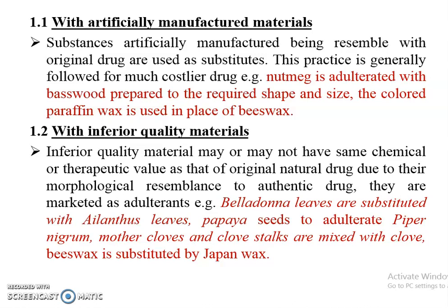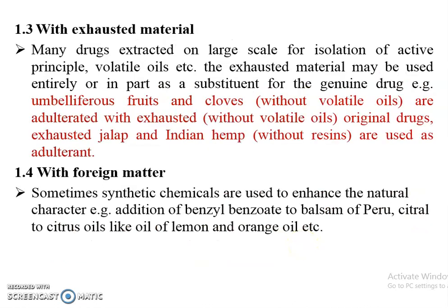Mother clove and clove stalks are mixed with clove. Beeswax is substituted by Japan wax. With exhausted material: many drugs extracted on a large scale for isolation of active principles, such as volatile oil, etc. — the exhausted material may be used entirely or in part as a substitute for the genuine drug. For example, cardamom fruit and clove are adulterated with exhausted original drug, and exhausted jalap and Indian hemp are used as adulterants.